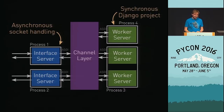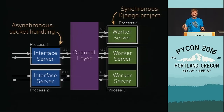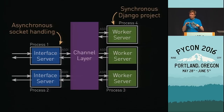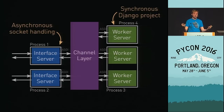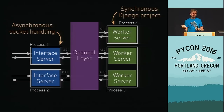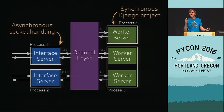This is kind of what Channels does. What Channels does is take that arrow in the previous slide, formalize it, and make it a channel layer. It deliberately breaks out the two halves that a WSGI server has — the bit that talks to HTTP and the bit that runs your business logic — into two separate processes. These can be bundled together or on different machines entirely.